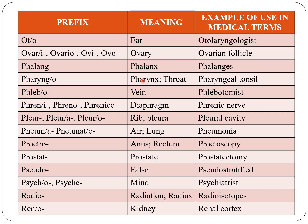Pharyngo indicates pharynx or throat. Phlebo indicates vein, as in phlebotomist. Phren, phreno, or phrenico indicates diaphragm, as in phrenic nerve.